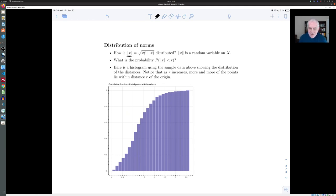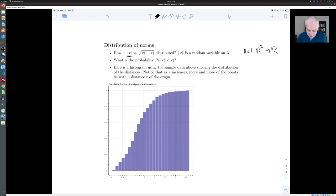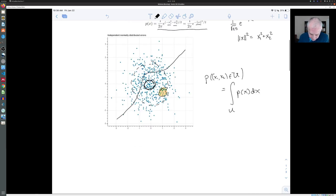Remember that a random variable is a function on the sample space. And the norm of x is a function from our sample space, which is R two to R. And it represents the distance that one of these random points lies from the origin. Here's the origin. And here's the random distance from the origin.